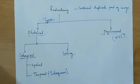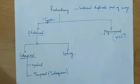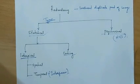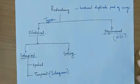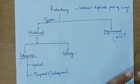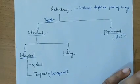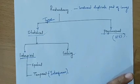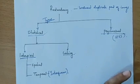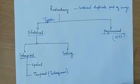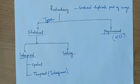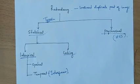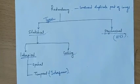Interpixel redundancy can be classified as spatial redundancy and temporal redundancy. Statistical redundancy means the redundant information in the image plane itself. Here, redundant information is basically treated as the dependency between two pixels or a number of pixels.